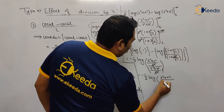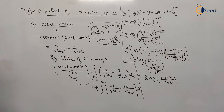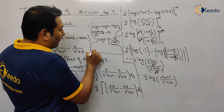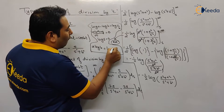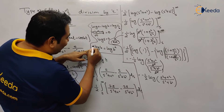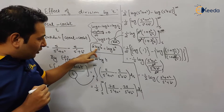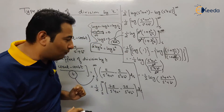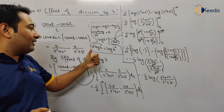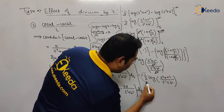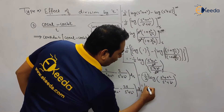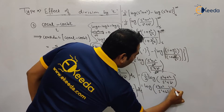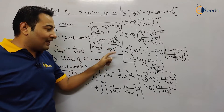We can simplify further using the log property: a·log(b) = log(b^a). The coefficient of the log is -½, so it goes up as the exponent: this becomes log[(s²+a²)/(s²+b²)]^(-½). We can stop here, or go one step further.